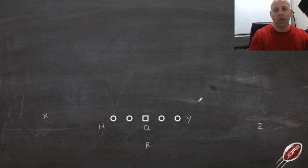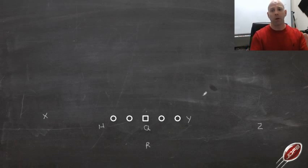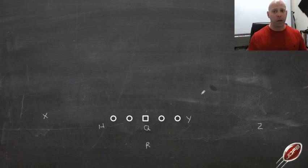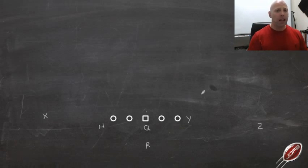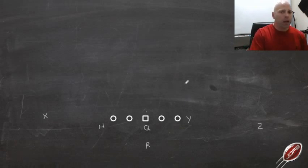This is a technique we'll use not only in the 4-2-5 but also the 4-4 — those are basically the same thing, except what we call those outside backers or overhanging safeties. That's really the only major difference. We're going to have our 6-technique defensive end, which I'll talk about in just a minute.